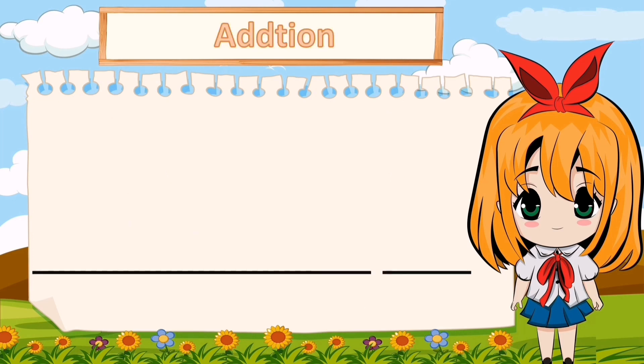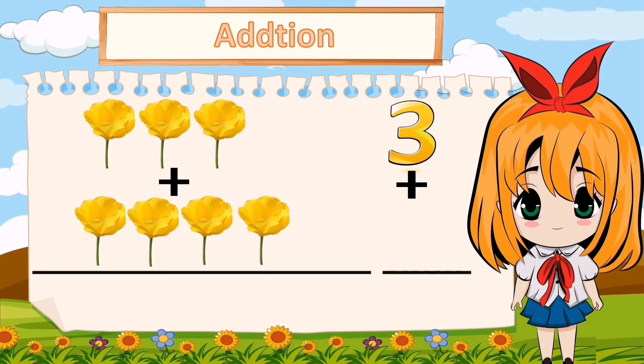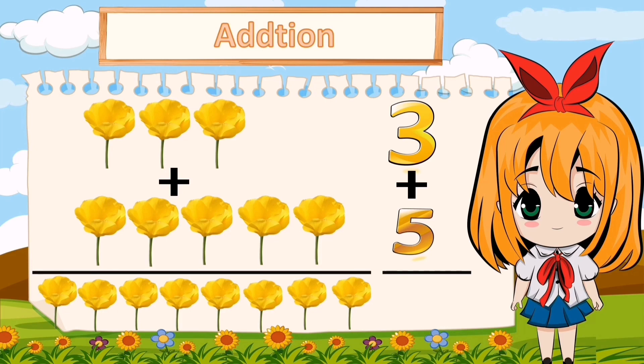You are very smart. Let's continue solving addition problems. If you have three flowers and your brother gives you five more flowers, how many total flowers do you have? Let's count again. One, two, three, four, five, six, seven, eight. So we have eight flowers. So three plus five equals eight.